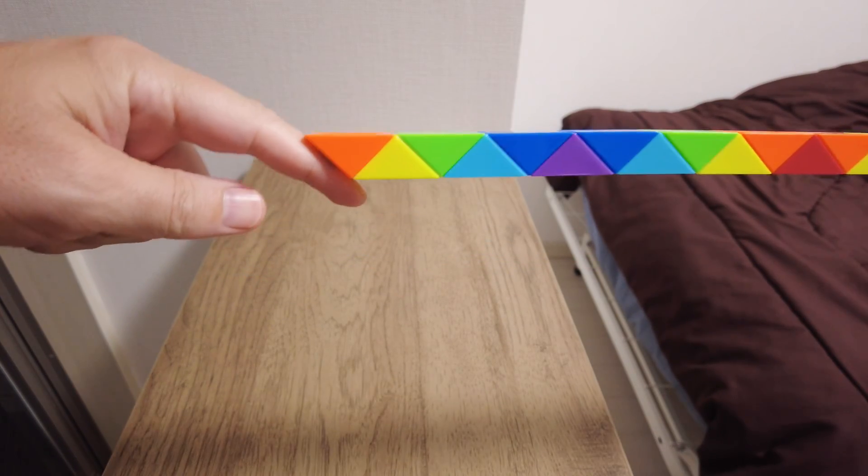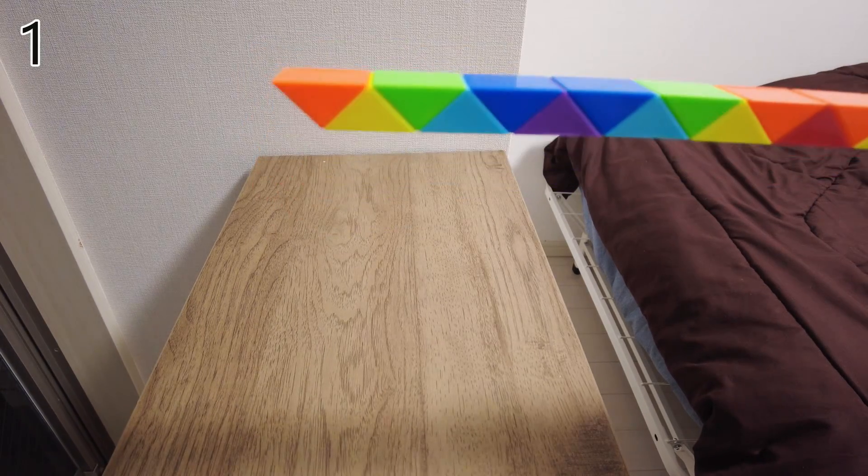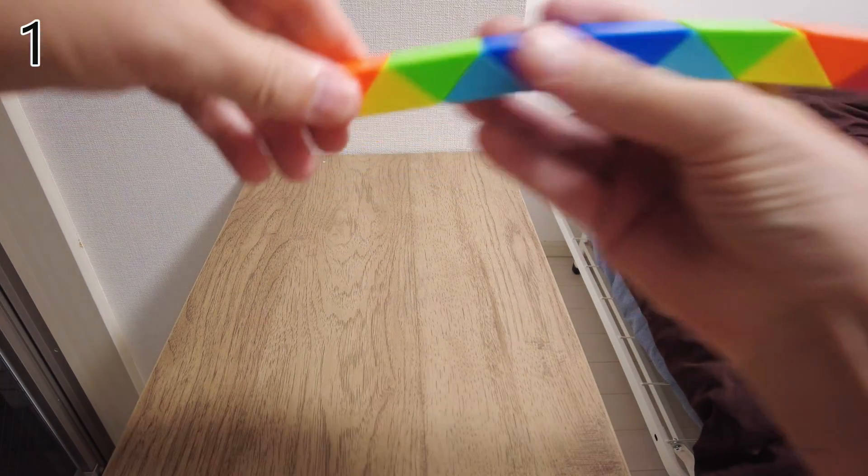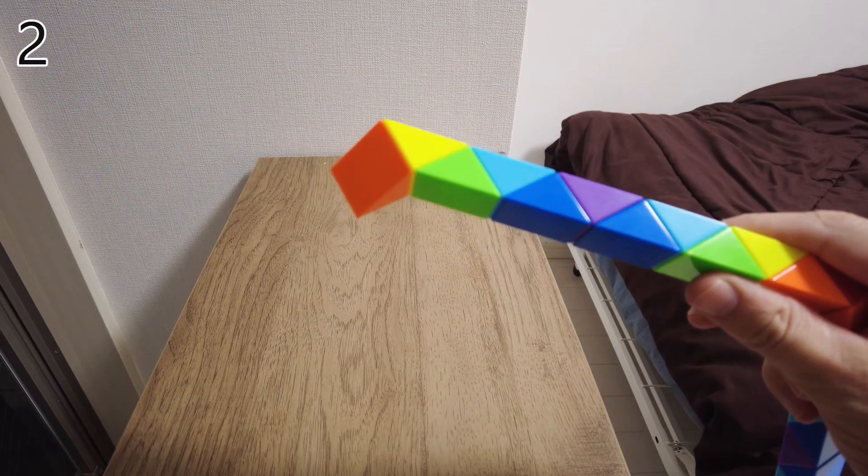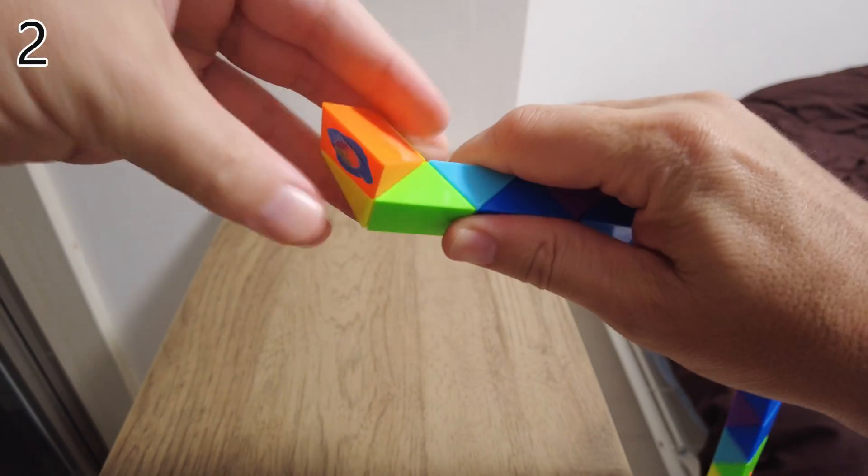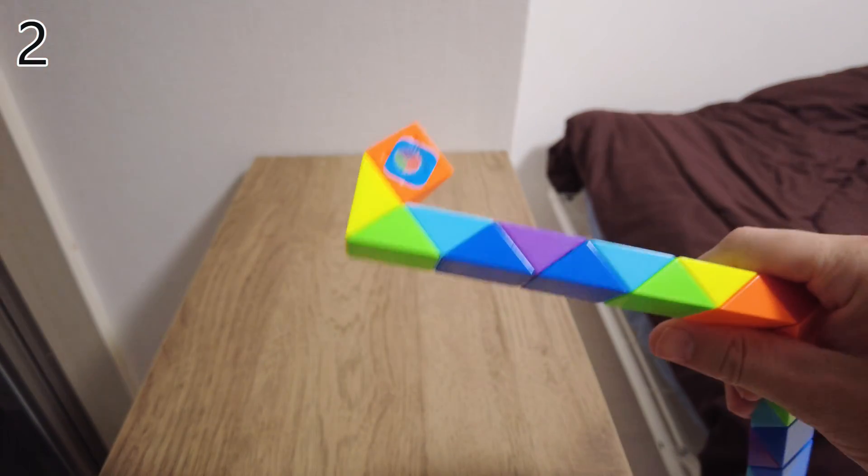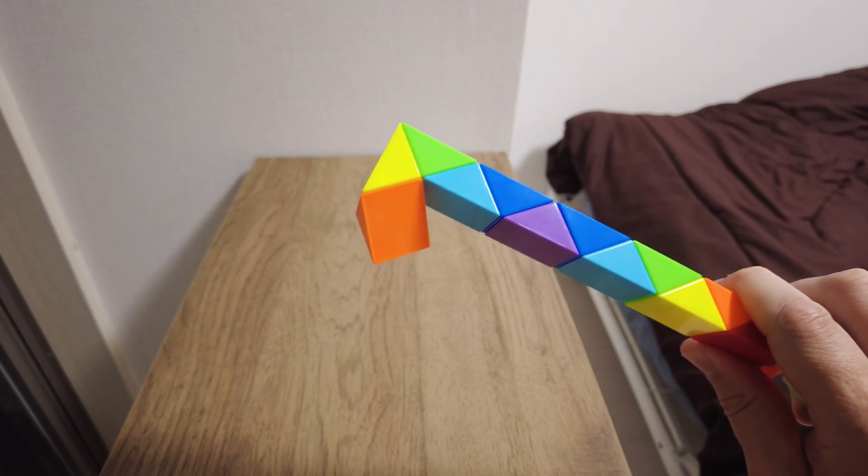So you start with the end at this angle, and you turn the end piece one click towards you. Now this join, two turns. One, two.